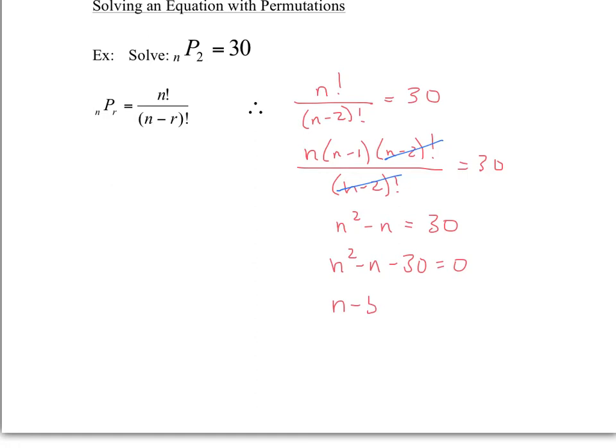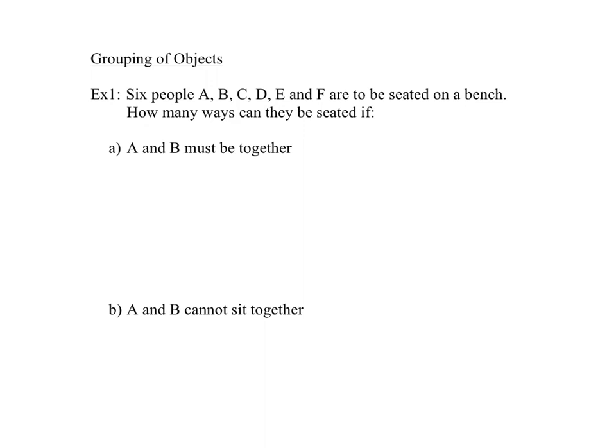You have n squared minus n minus 30 equals 0. All I'm doing is solving algebraically now. We have n minus 6 and n plus 5 equals 0. n equals 6, n equals negative 5. Since we can't have a negative amount of objects, n equals negative 5 is rejected, and n equals 6 is accepted. If you were to check this, plug in n equals 6 in your calculator. nP2 should give you 30.